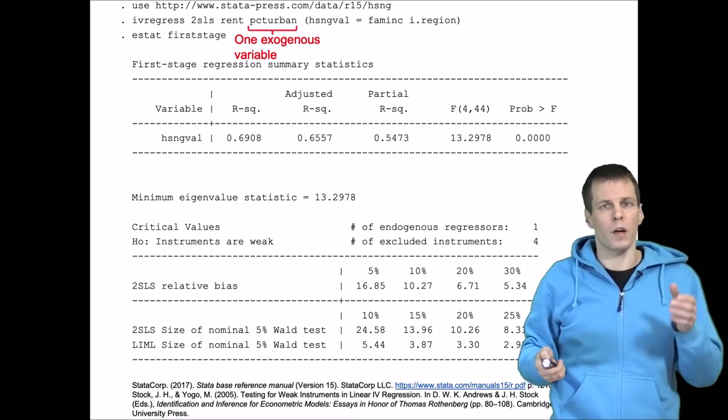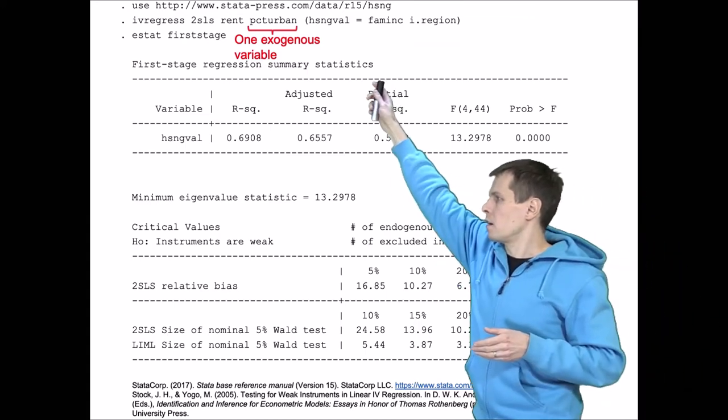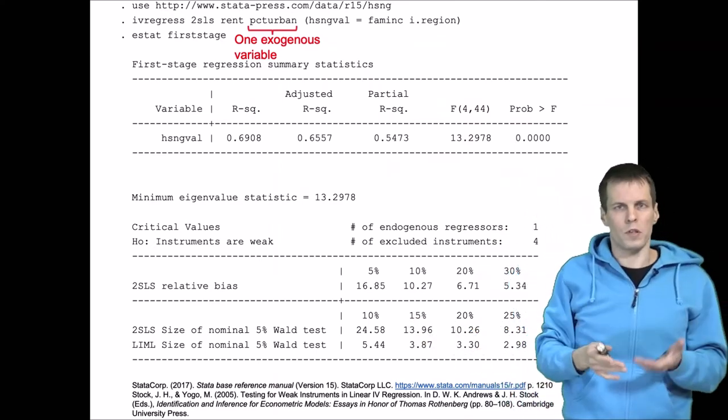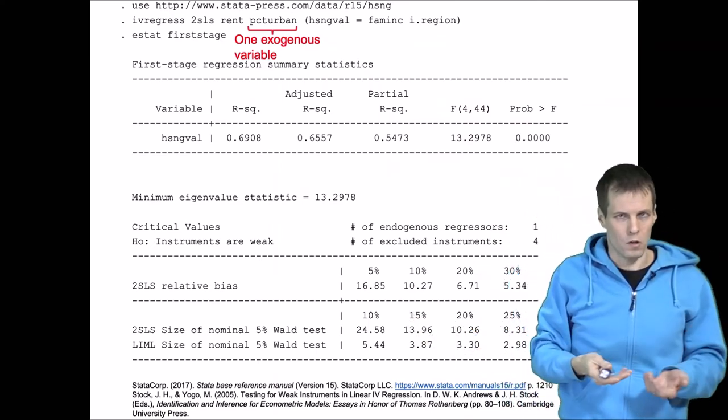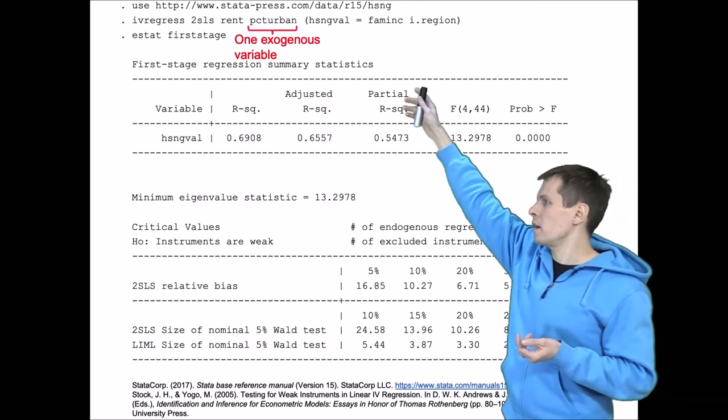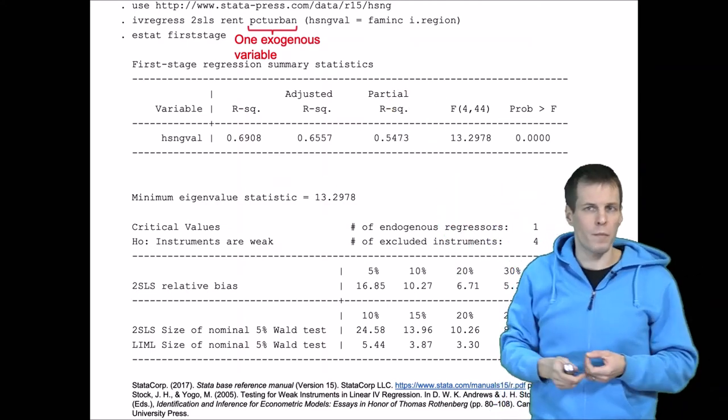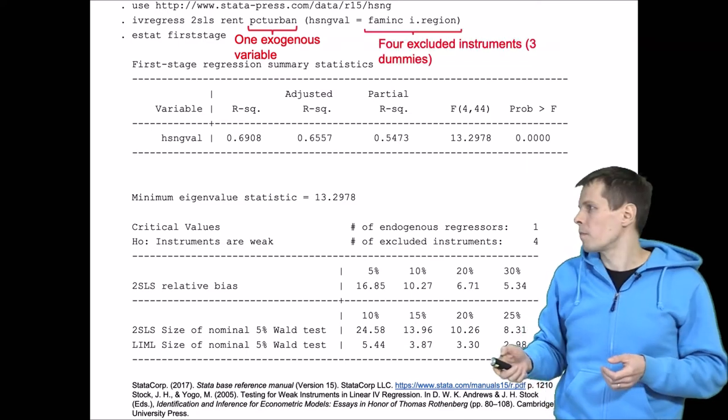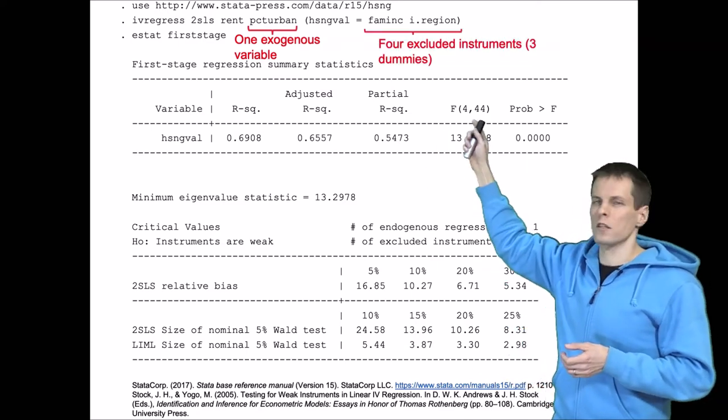So we know that we have two predictors. That predictor here is endogenous and percent urban is exogenous, and then this endogenous predictor is instrumented with family income and three dummy variables that indicate different regions. So we have four excluded instruments.